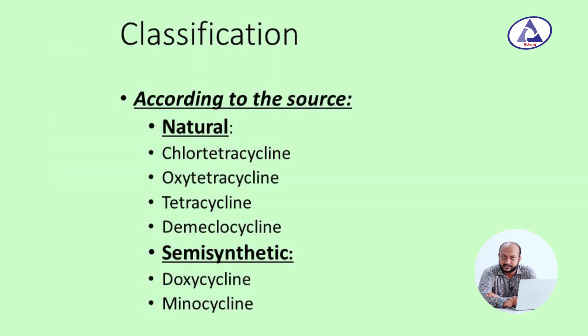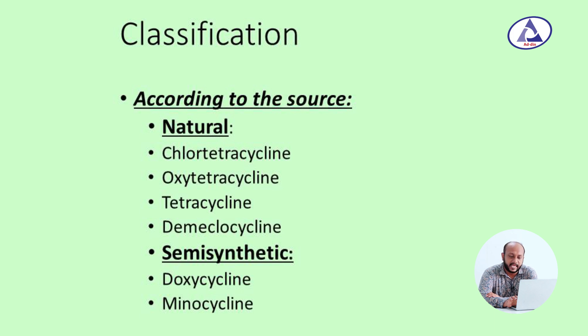Classification of tetracyclines: tetracyclines can be classified into natural and semi-synthetic. In the natural category, examples are chlorotetracycline, oxytetracycline, tetracycline, and demeclocycline.